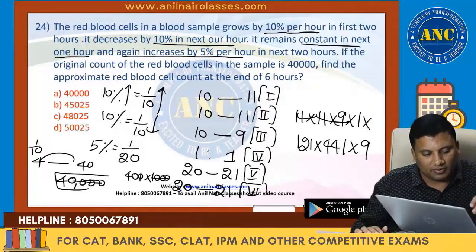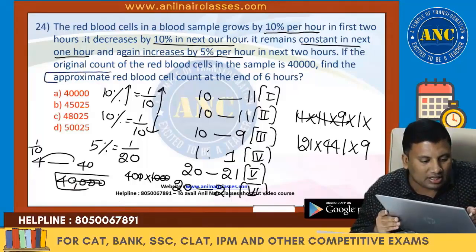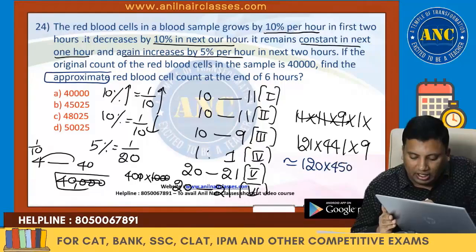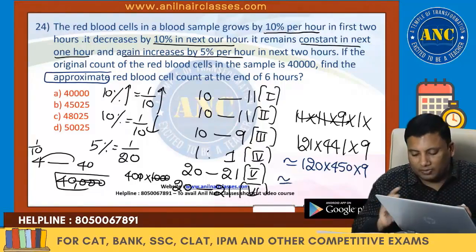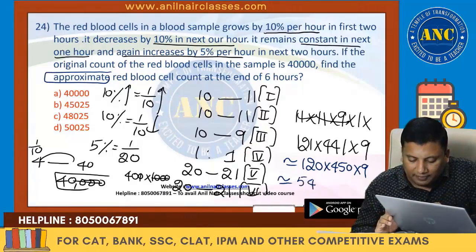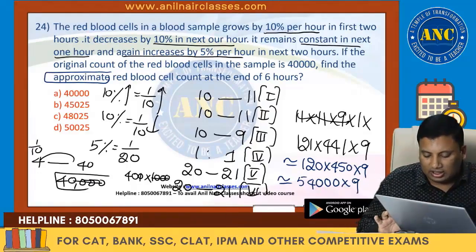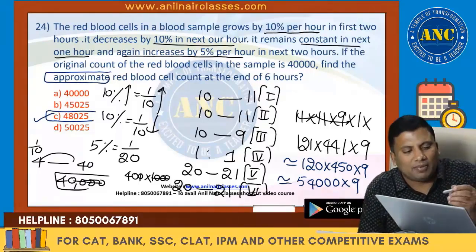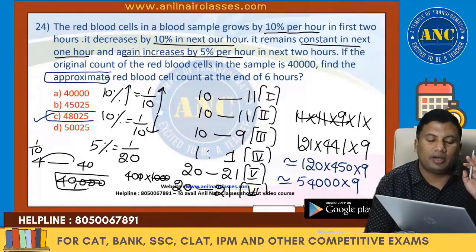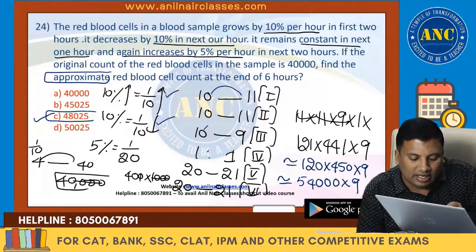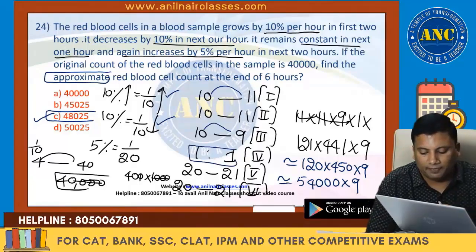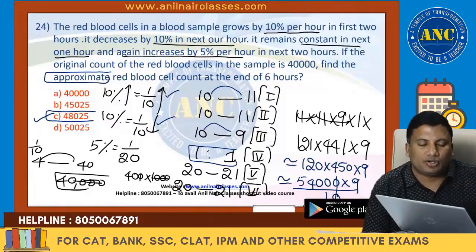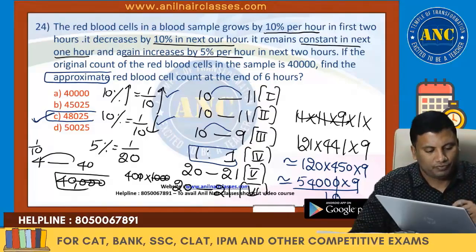Approximating: 121 ≈ 120, 441 ≈ 450. 120 × 450 = 54,000. Then 54,000 × 9 = 486,000 — wait, refining: 5,400 × 9 = 48,600. Answer is closer to 48,025. It's clearly mentioned the answer is approximate. Converting: 5,000 × 9 = 45,000 and 400 × 9 = 3,600, giving 48,600. Answer is closest to 48,025.